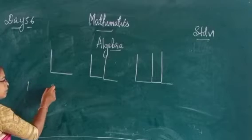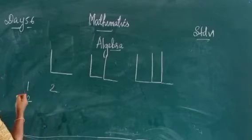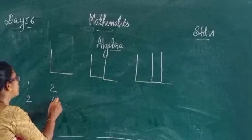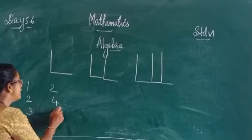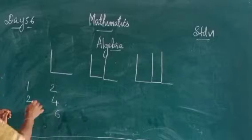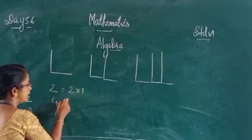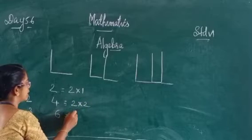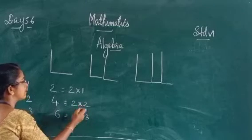So the pattern is: 1 egg needs 2 matchsticks, 2 eggs need 4 matchsticks, 3 eggs need 6 matchsticks. Two threes are six.